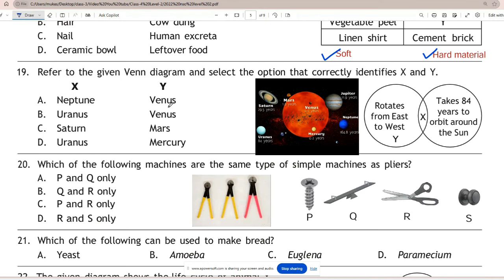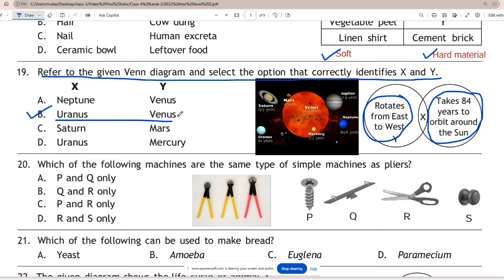Question 19: Refer to the given Venn diagram and select the option that correctly identifies X and Y. Correct answer is B. Uranus takes 84 earth years to orbit the sun and Venus rotates from east to west. So X is Uranus and Y is Venus.